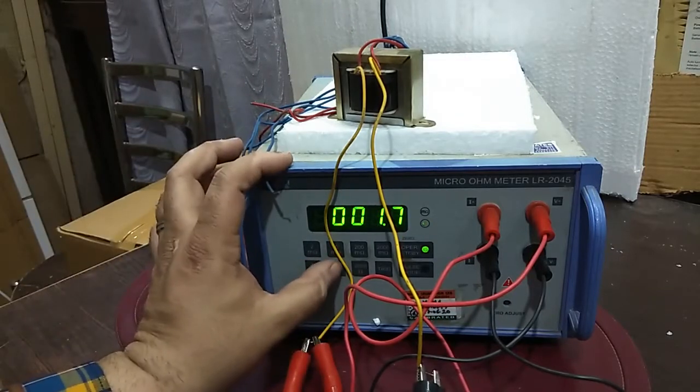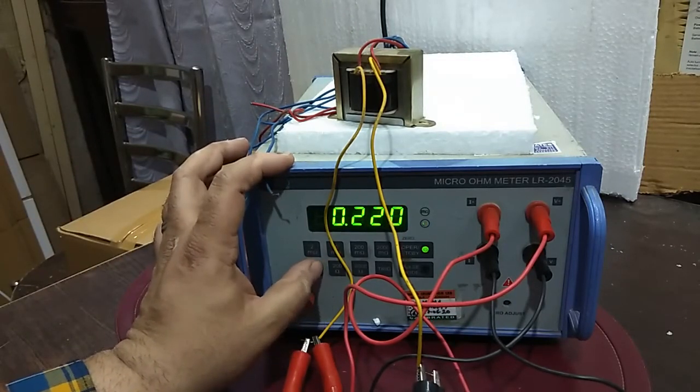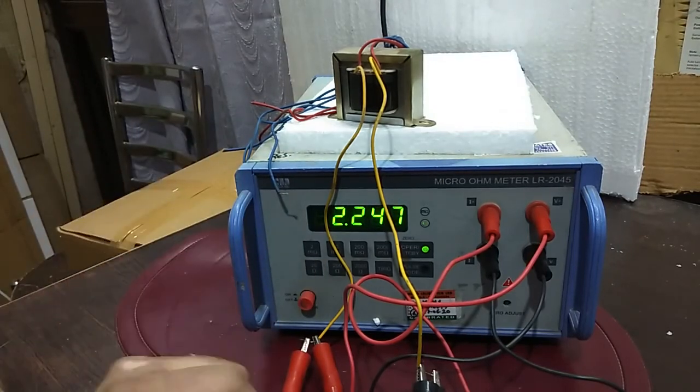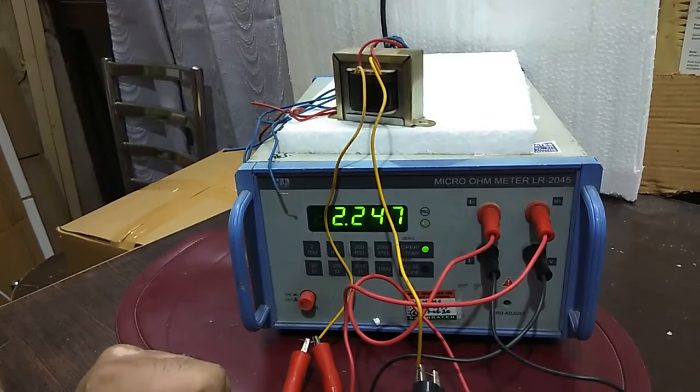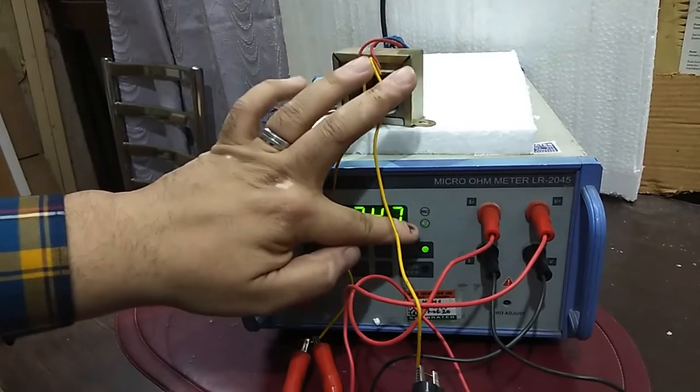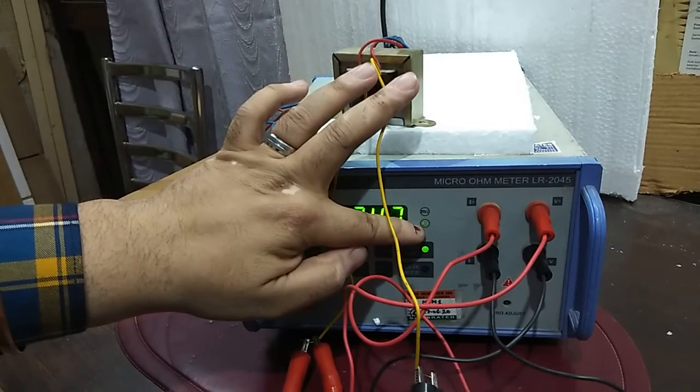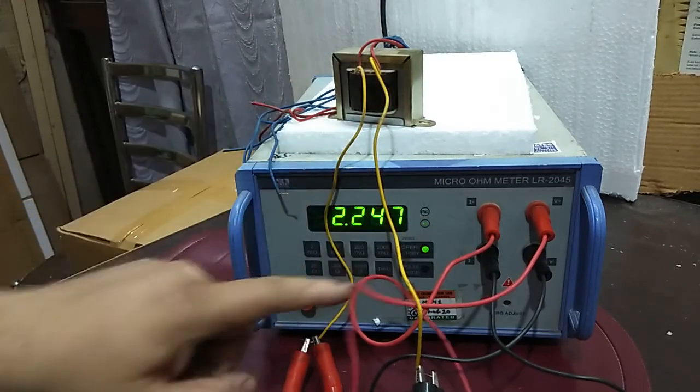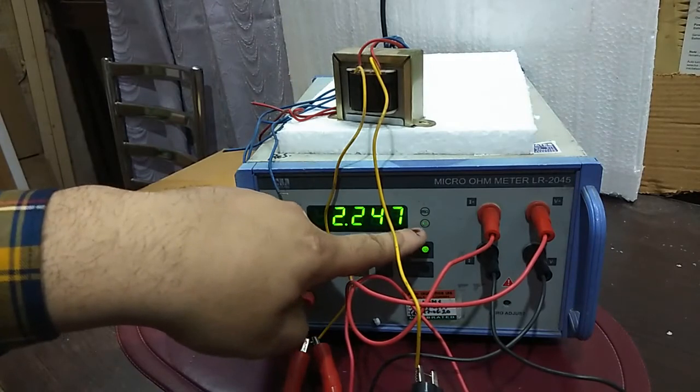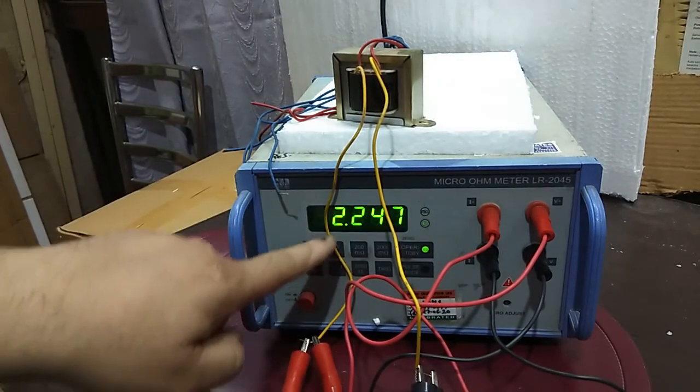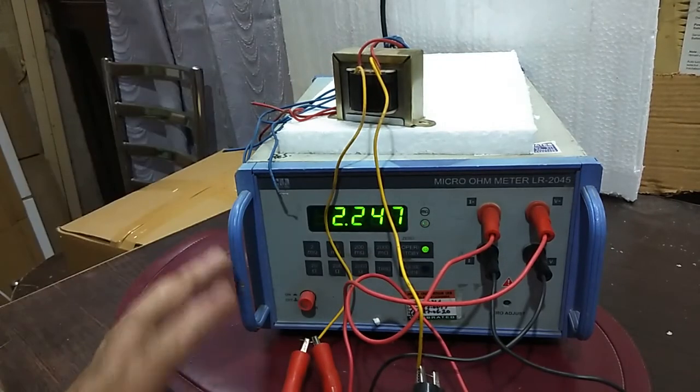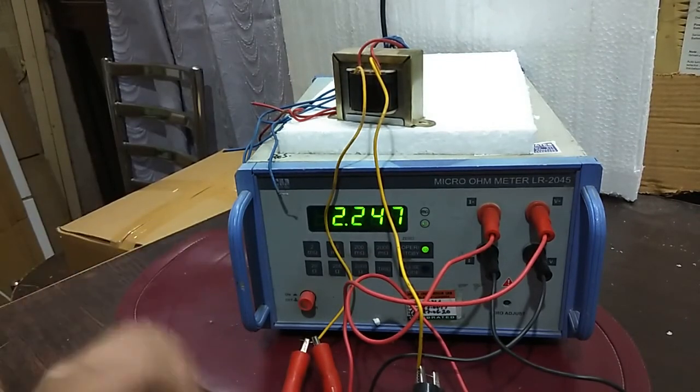It's showing 2.247 ohm. See the light is also over here. If the results will be in milliohm then this light will be on. Now this light is going on means it is ohm. So the results of this transformer is 2.247 ohms.